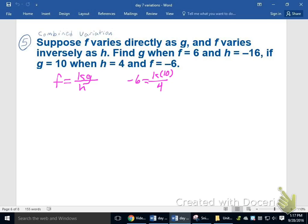So now I'll figure out what my k is really quick. I will multiply both sides by 4 to get negative 24 equals 10k. I'll divide by 10, and I'll get negative 2.4. Now I've got a function I can work with. f equals negative 2.4 g over h.